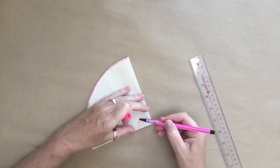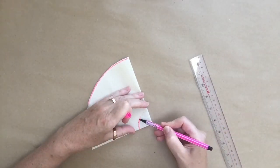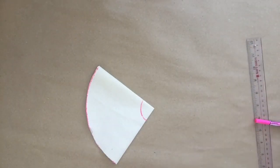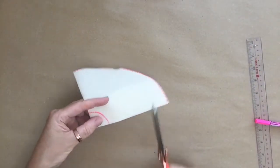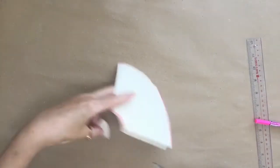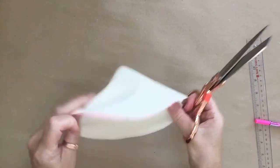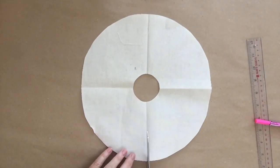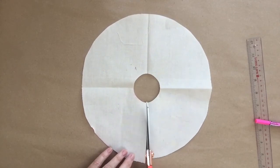Go ahead and cut that out once you've marked it up. In order to make the flounce work, I actually have to cut along one of those fold lines. You'll understand in a minute when I try to put it on the mannequin.